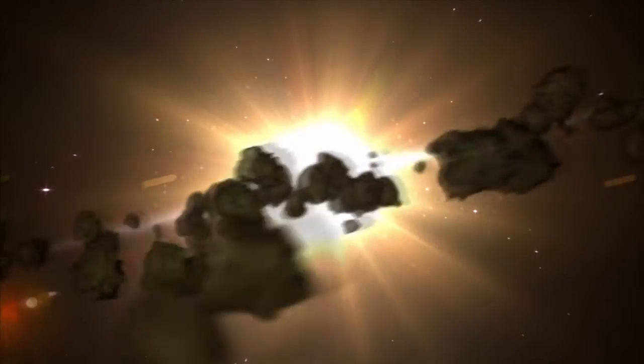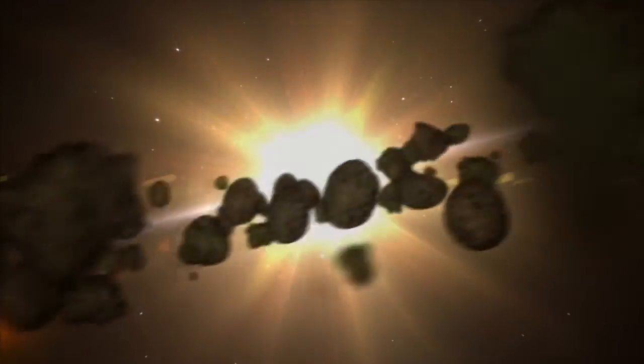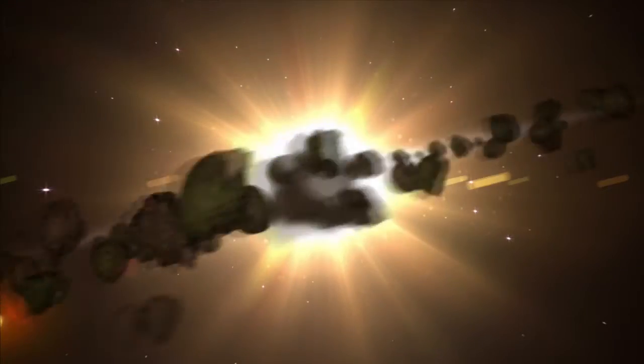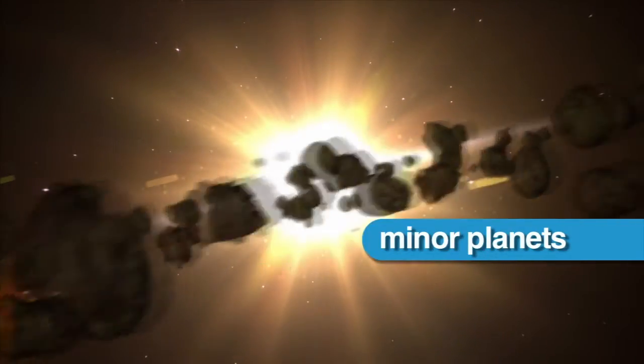Although asteroids orbiting the Sun can be very big and even have their own moons, they are too small to be considered planets. They are often called minor planets.